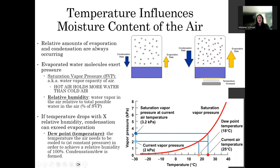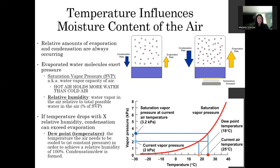We can also get a pretty good idea of relative humidity from this graph. For example, if the current air temperature is a nice balmy 25 degrees Celsius, the total vapor pressure that can be held at this temperature is 3.2 kilopascals — that's the saturation vapor pressure. In reality at this particular moment, the current vapor pressure is only 2 kilopascals, so the air can actually hold more water than it's holding now. We can calculate relative humidity as 2 over 3.2 times 100 — the percentage of current vapor pressure over total possible vapor pressure.